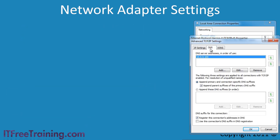On the DNS tab you can set up which DNS servers your computer will use to resolve names. On the previous tab you can configure two, but if you want to configure more you can do it here. The options below determine how a DNS address will be resolved. By default, append primary and connection specific DNS suffixes is selected.